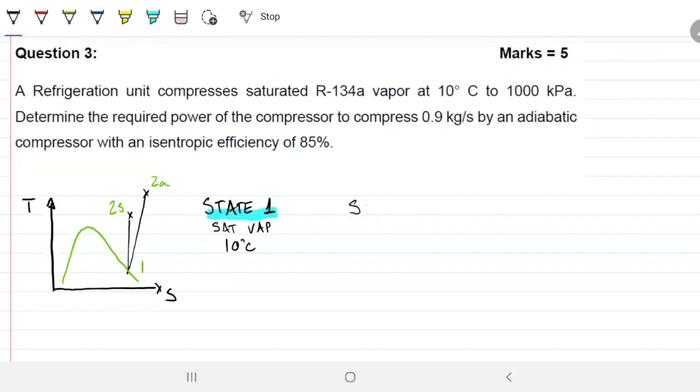Now, state 2S, what do I know about state 2S? I know the pressure will be 1,000 kilopascals. And I also know my entropy will be exactly the same as the other entropy. That's pretty much what 2S is. And my actual one, state 2 actual, it will have the same pressure of 1,000 kilopascals. And we don't know any other information about it.